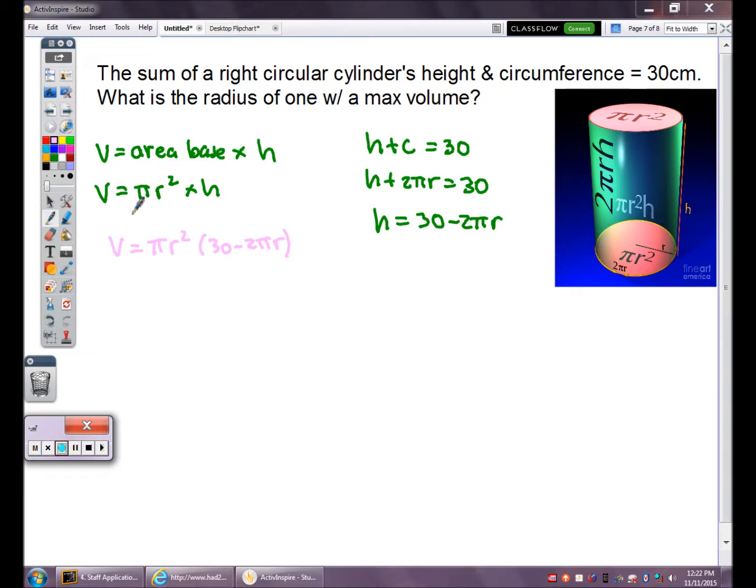My volume equation has too many variables: V, R, and H. I can get rid of h by substituting. If h equals 30 minus 2 pi r, I can swap that in. Now I only have volume equals pi r squared times 30 minus 2 pi r. Distribute pi r squared, you get 30 pi r squared minus 2 pi r cubed. I'm trying to maximize the volume. The max will occur when the derivative equals zero.